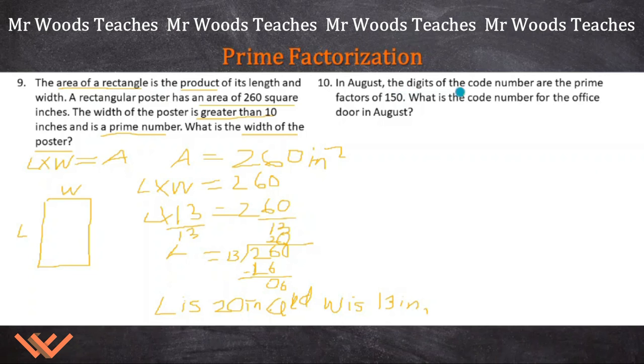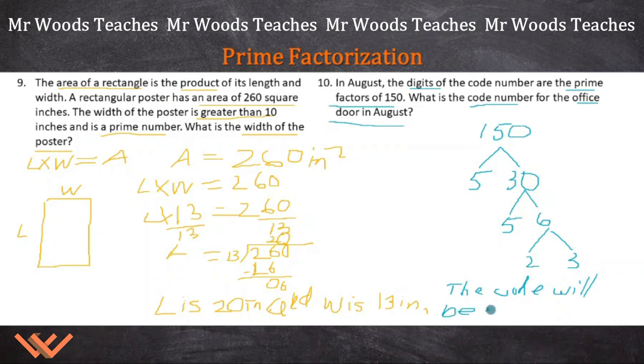Let's look at number 10. In August, the digits of the code number are the prime factors of 150. What is the code number for the office door in August? Digits of the code number, prime factors of 150. What is the code for the office door in August? So we're looking for that code number for office door in August, but it gives us this hint. It's the prime factors of 150. So we just have to do the prime factor of that. 150. I know that tens, fives and tens, when it ends in a zero or five, I know that five is going to be one of those. 150. Well, what's five times what is equal to 15? That's three, multiply that by 10. So it's going to be 30. And then I can look at this and go, okay, there's going to be five times six, and then two times three. So now I have all the prime factors here. So I can write down the code will be five, five, two, three in August. That's it.